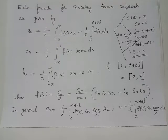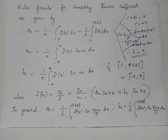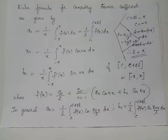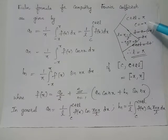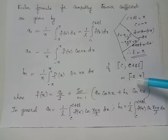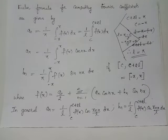Suppose we take a function f(x) defined for the closed interval [−π, π]. Then we have c equals −π and c + 2l equals π. We get l equals (π − c)/2, and therefore l equals (π + π)/2 which equals π. Thus we obtain l = π, which is valid for the interval [−π, π].